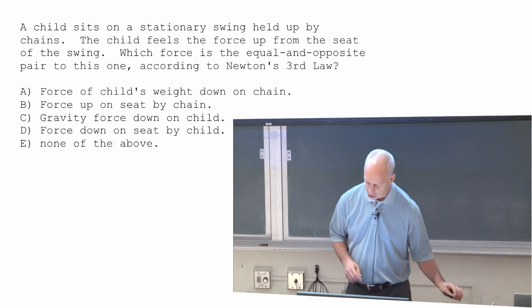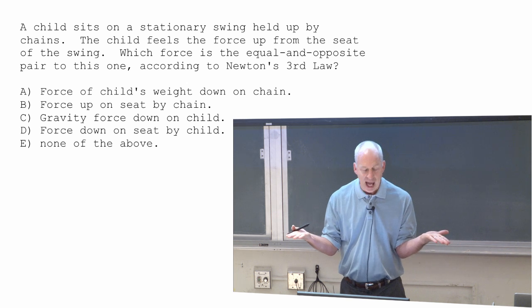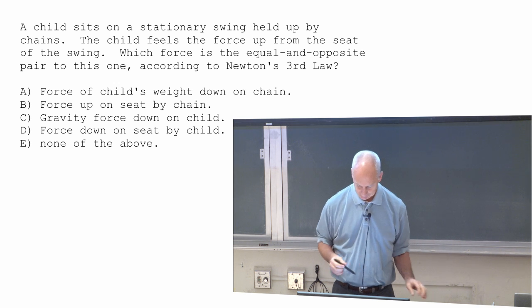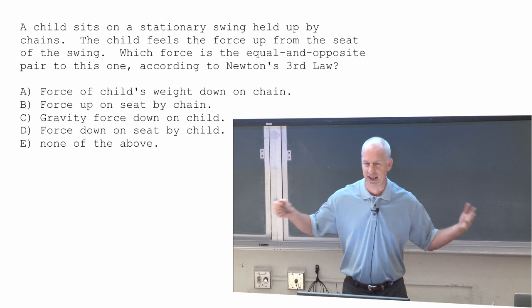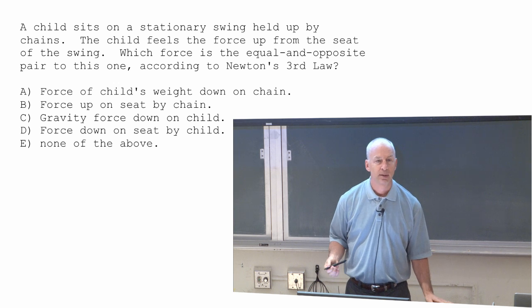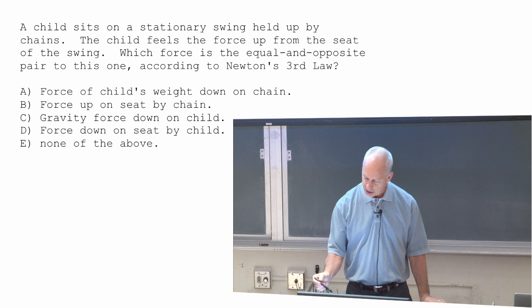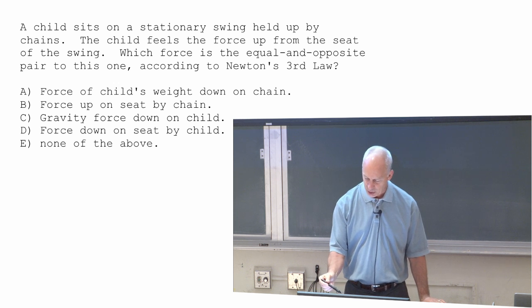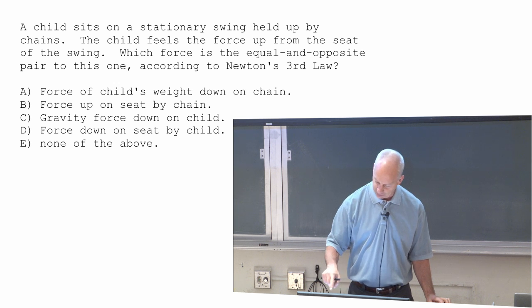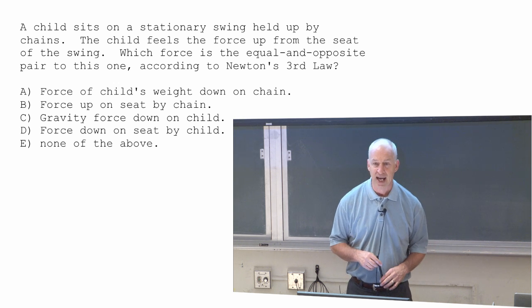Let's try it again. Child sits on a stationary swing. So there's a platform, a wooden platform held up by chains. Child is sitting on this platform that's held up by chains. The child feels the force upward by the seat. The wooden platform is pushing upward on the child. Which force is the equal and opposite pair to this one according to Newton's third law? The equal and opposite pair to the force that the child feels upward by the seat. No doubt. Here we go.